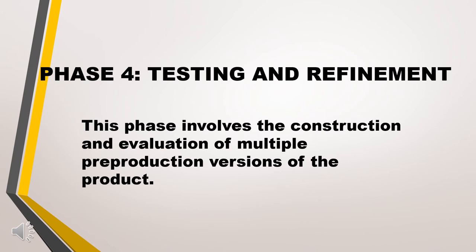Phase 4 is testing and refinement. This phase involves the construction and evaluation of multiple pre-production versions of the product. Prototypes are built during this phase. Early prototypes are tested to determine if the product works as designed and satisfies customer needs. Later, more refined prototypes are produced to test performance and reliability in order to identify necessary engineering changes for the final product.